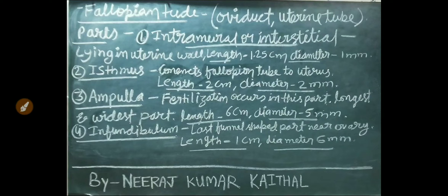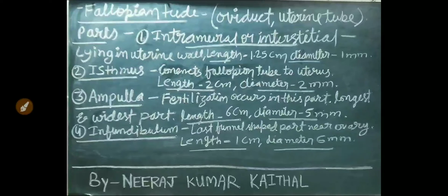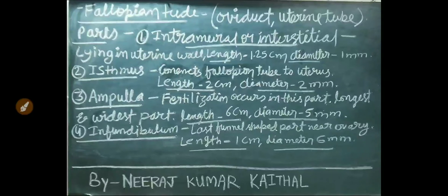The fallopian tube is known as the oviduct or uterine tube. Its parts: (1) Intramural/interstitial part — lying in the uterine wall, length ~1.5 cm, diameter ~1 mm. (2) Isthmus — connects fallopian tube to uterus, length ~2 cm, diameter ~2 mm. (3) Ampulla — the longest and widest part, where fertilization occurs, length ~6 cm, diameter ~5 mm. (4) Infundibulum — funnel-shaped part near the ovary, length ~1 cm, diameter 6 mm, with fimbriae attached.